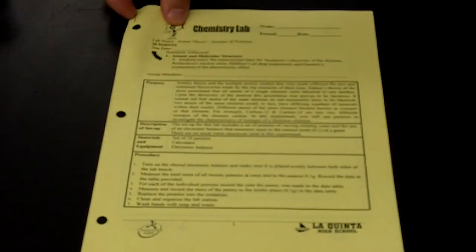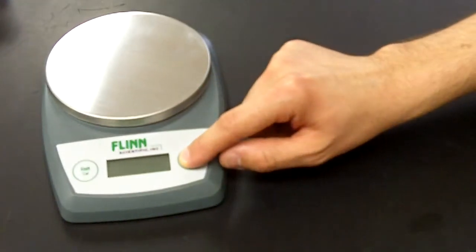The procedure has us first turn on the electronic balance. I'll slide the electronic balance into the view of the camera. The power button, pressing that. Balance warms up. Turn on the shared electronic balance and make sure it is placed evenly between both sides of the lab bench.